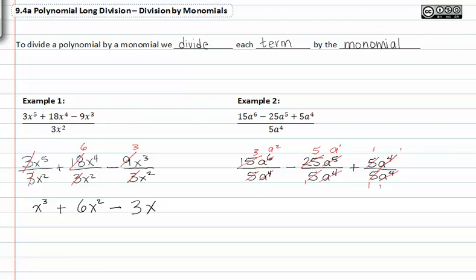And I get for my final answer, three a to the second minus five a plus one. Notice that a to the fourth over a to the fourth is equivalent to one, and same with five over five. So I have a one here.